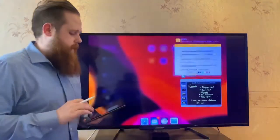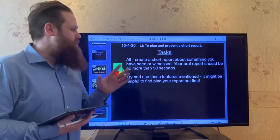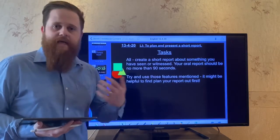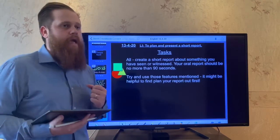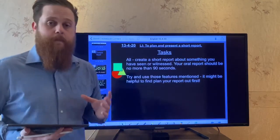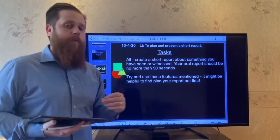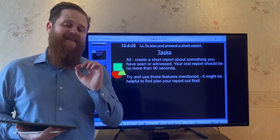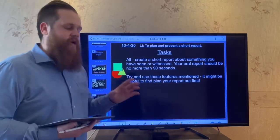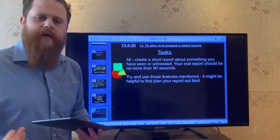So, these are the different features that you might find in a chronological report. Remember, a report is in time order. Now, then, if we look at our task for today, you're going to be creating a short report, about 90 seconds, of something that you've seen or you've witnessed or that has happened. That could be what you did yesterday at the weekend. That could be about something that happened in school last year. It could be something about a holiday that happened two, three, four years ago. It doesn't matter. But you're going to give me a short report. Remember, that will be in time order because it's a chronological report. Your oral report, which is spoken, should be no more than 90 seconds. So, I don't want a 5, 10, 20-minute video. 90 seconds. So, try and use those features that we have mentioned. But it might be helpful if you plan your report out first.